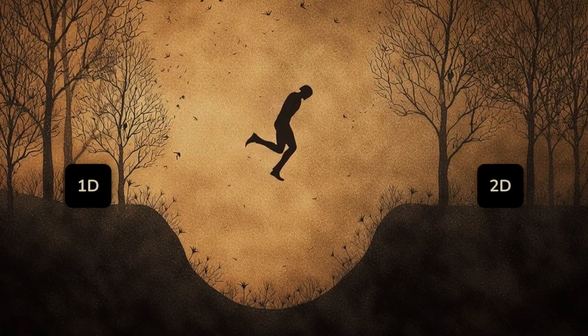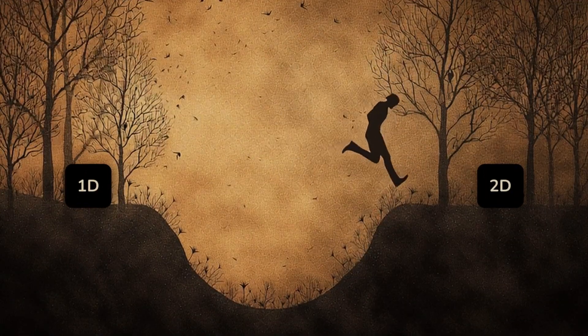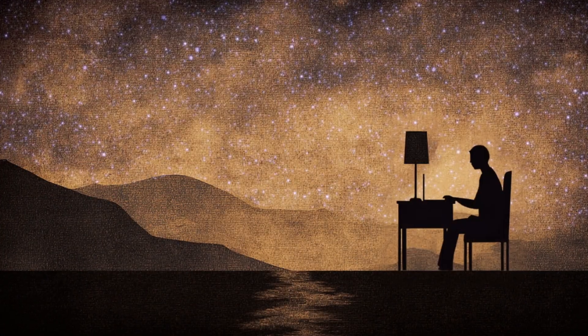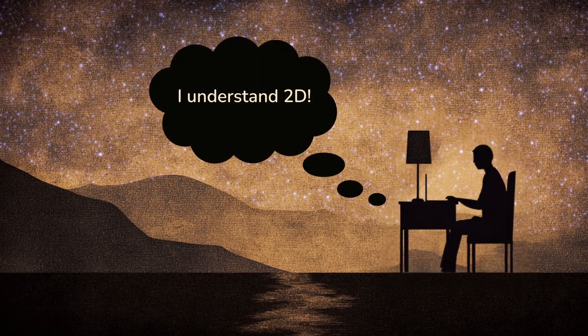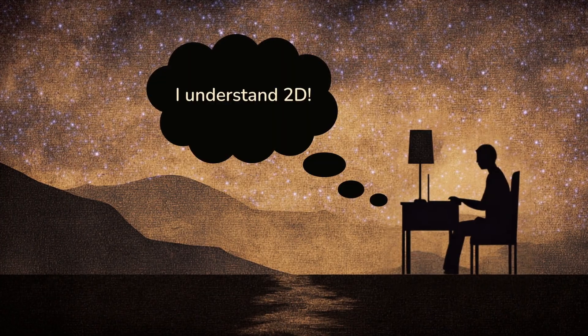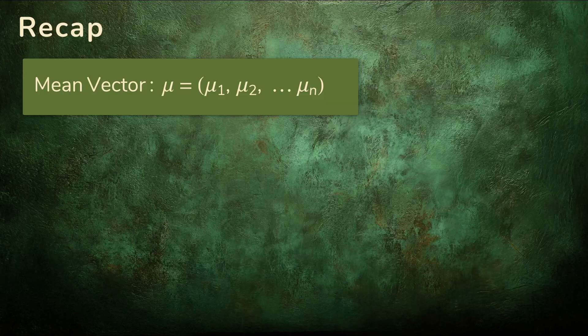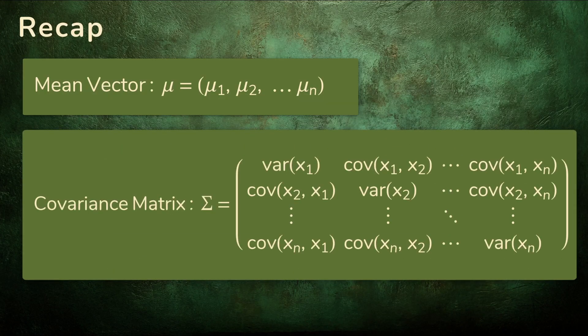That might sound like a big jump, but it really is the same idea, just extended into a higher dimension. Here's the encouraging part. If you understand the 2D case, you already have all the tools for the general case. An n-dimensional normal distribution has a mean vector with n numbers, and a covariance matrix with all the pairwise covariances.